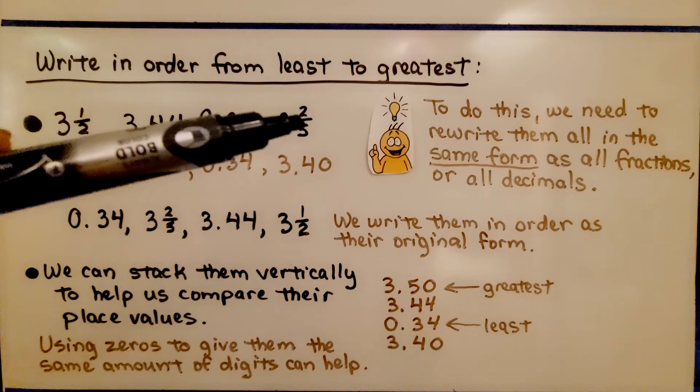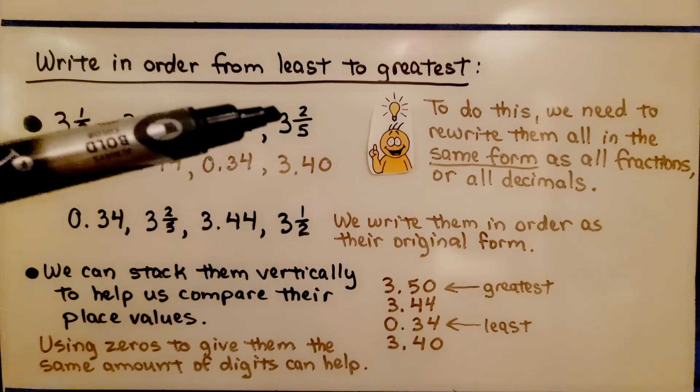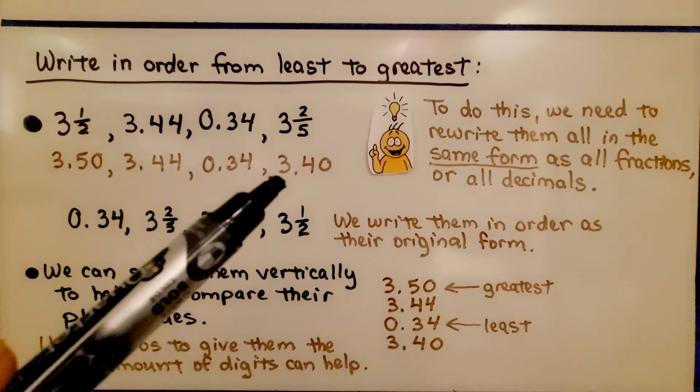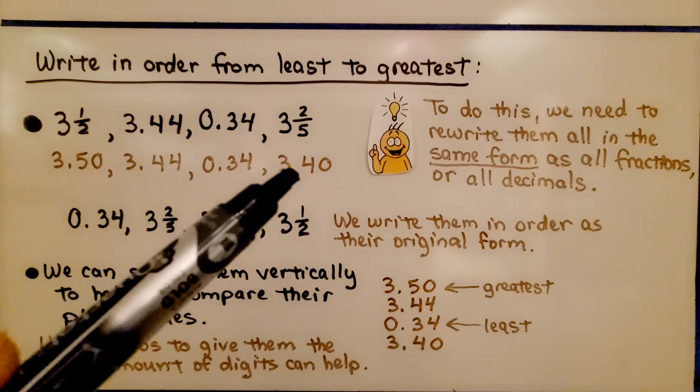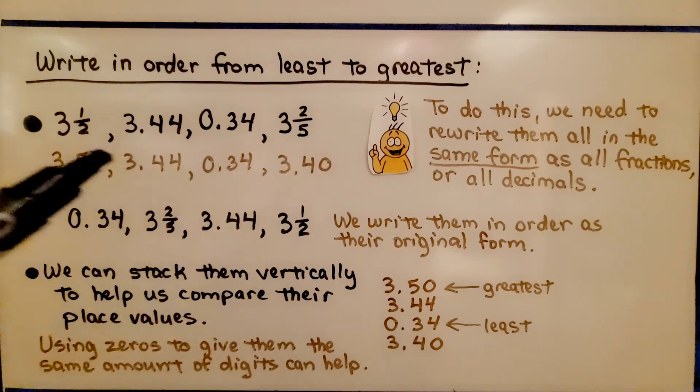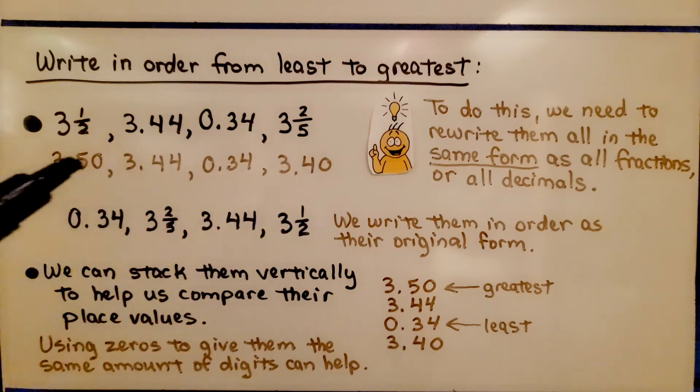And 3 and 2/5, we can do 2 divided by 5 and then add the whole number 3. We see that it's 3 and 40 hundredths or 3.4. We can just add the zero so they all have a hundredths place.